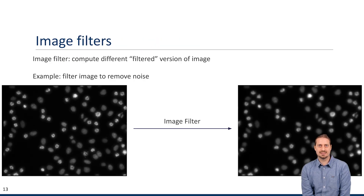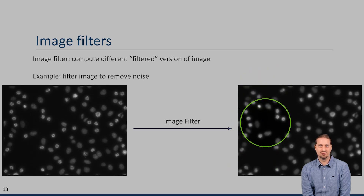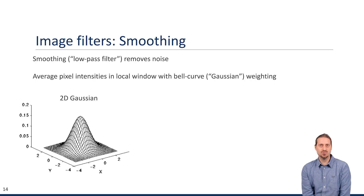The first concept is image filtering — familiar from image processing, social media, or Photoshop. We take an input image and apply a filter that computes a different representation, as shown on the right-hand side. Here we are concerned with fairly simple filters. One very important example is removing noise — to remove noisy acquisitions in the imaging process. We can remove noise by smoothing an image, also called low-pass filtering, done by Gaussian smoothing.